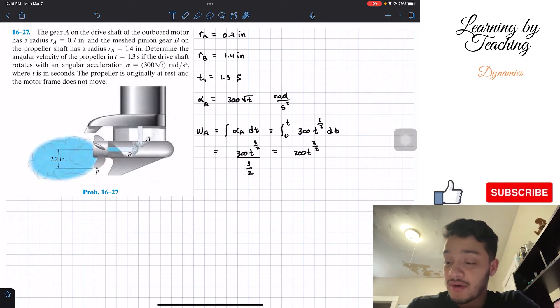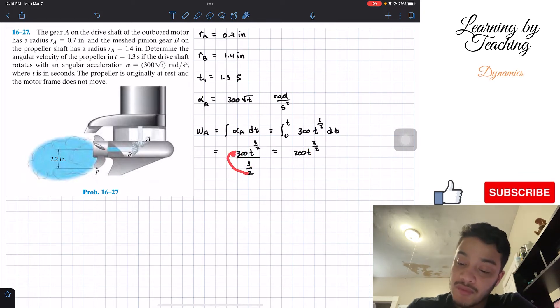The reason I know it's 200 is because this 3 divided by 3 will give me 1, and then this 2 multiplied by 100 will give me 200. So that's how I did this.